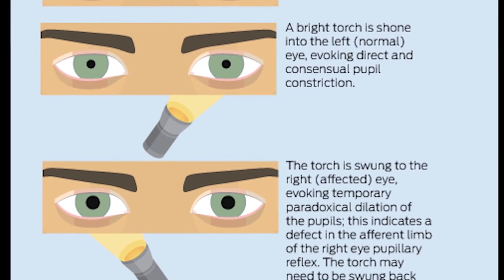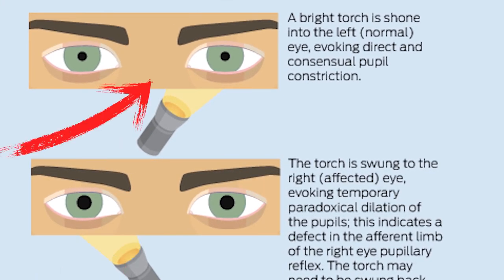And then you're going to move the light back and forth. You're going to get constriction, dilation, constriction, dilation, constriction, dilation. And that's Marcus Gunn Pupil.